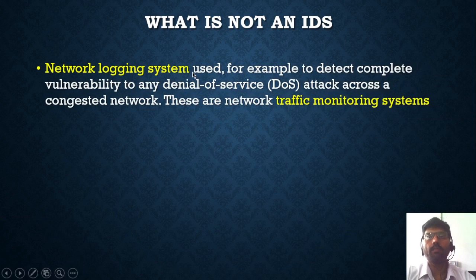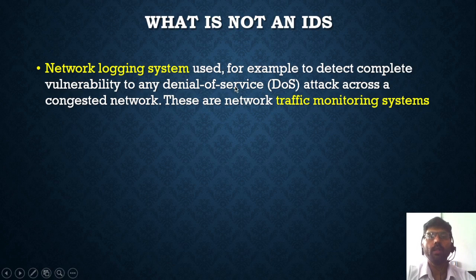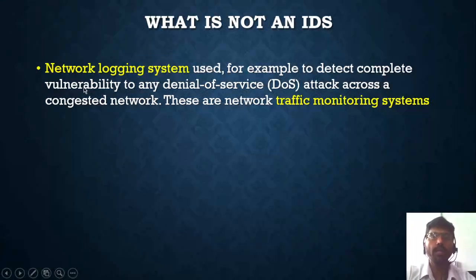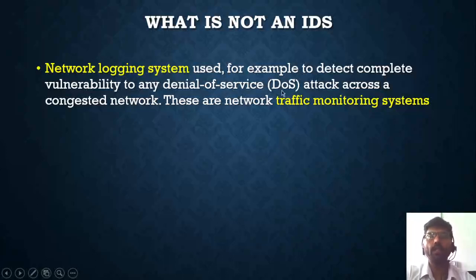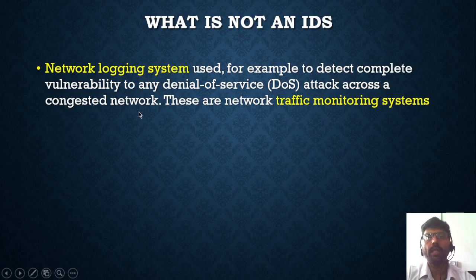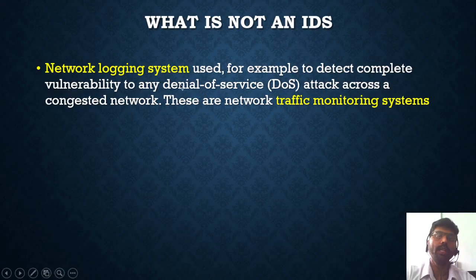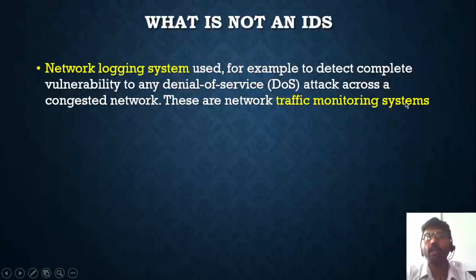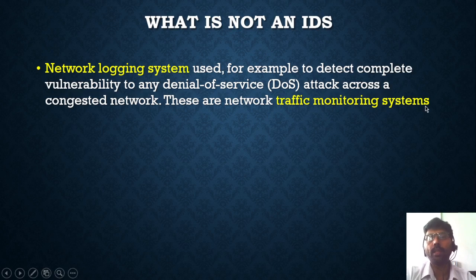The network logging system — for example, if in our network a vulnerability is there, some flaws exist due to which an attacker tries to perform a DOS attack, that is a denial of service attack. This causes congestion in the network, meaning data cannot transfer and delay occurs. Software used to identify such flaws and vulnerabilities is called a traffic monitoring system, and these are not actually IDS. These are a separate tool called a traffic monitoring system.